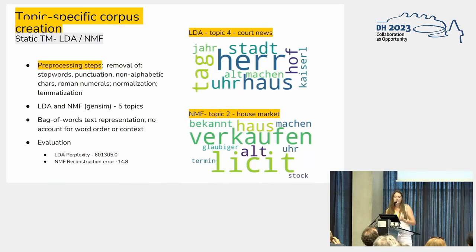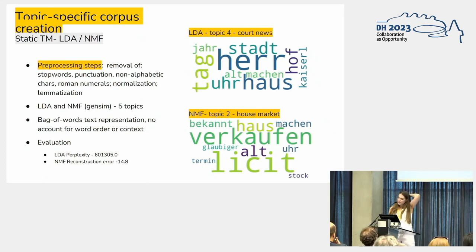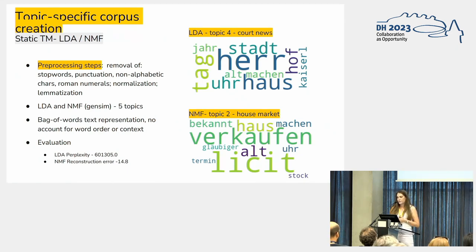For the LDA and NMF run on these 300 issues, I did preprocessing: removed stop words, punctuation, non-alphabetic characters, and Roman numerals, and normalized some of the text because differences in the orthography might not be well recognized by the models. I used LDA and NMF from Gensim. The most important decision was how many topics to choose — I ended up with five topics, which gave the best evaluation results. This method takes no account of context or word order. The LDA perplexity results were not very good; the NMF results were a little better.